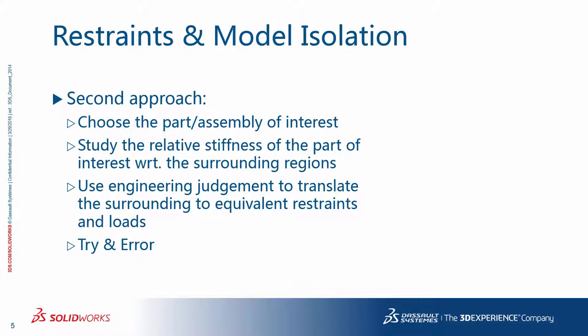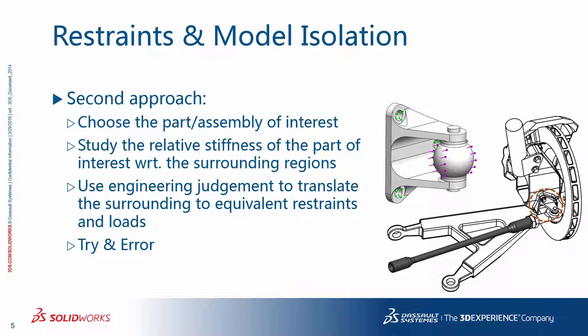A second approach is to choose the part or assembly of interest, study the relative stiffness of the part of interest with respect to the surrounding regions, use engineering judgment to translate the surroundings to equivalent restraints and loads, and try and error. In this example, you are interested in the behavior of the three-part bracket assembly of a portion of the suspension system in a car. As the car turns, the rod exerts force, which is transferred to the bracket, and that in turn is hinged to the rest of the system using three bolts. Because the rest of the system is rather stiff compared to the bracket assembly, you may decide to not include additional parts and substitute the effects with some hinge restraints on the cylindrical faces and sliding surface restraints on the back plate. These are approximations, but for the behavior of interest and within requirements of this analysis, it is probably good enough.